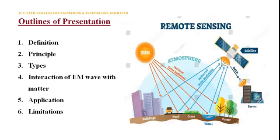These are the outlines of the presentation. First is the definition of remote sensing. Second is the principle of remote sensing. Third is the types of remote sensing.